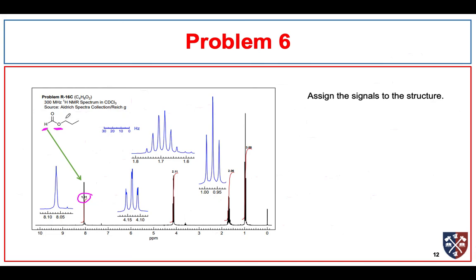I now take a look at the CH2 group bonded to an oxygen — I expect it somewhere around 4 ppm. There's something at 4 ppm integrating for about 2 hydrogens, and it's a nice triplet. I'm going to assign it there.